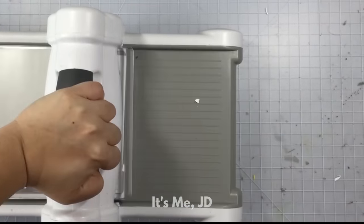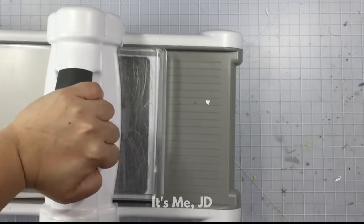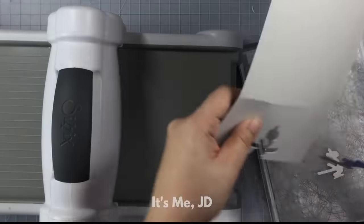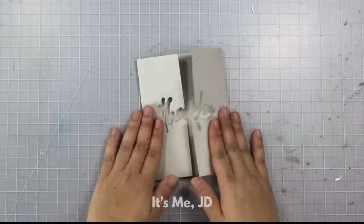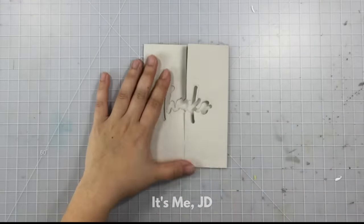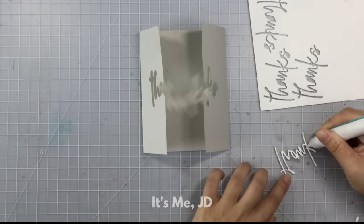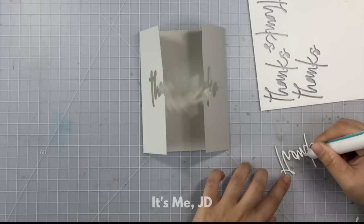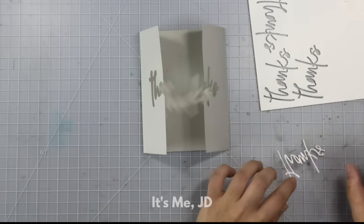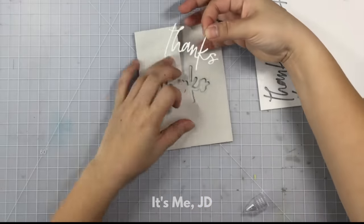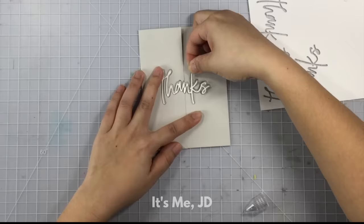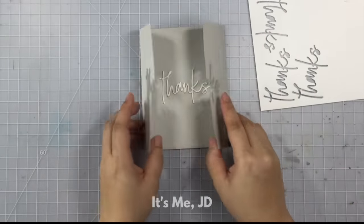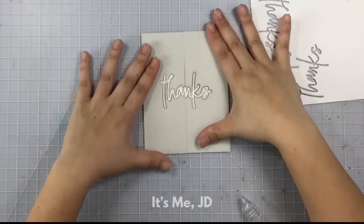I love when word dies come with a shadow or outline die. I feel like you get a lot more use out of it. Like if you want to make your sentiment pop, then you just add the shadow behind it, or you can use it for fun techniques like this. So what I'm doing is I'm taking the actual word die and I ran it through my die cutting machine three times so I can layer all three die cuts together to just get a real dimensional effect. And then I'll place it within where I cut the shadow die, and that's how my gatefold card came together.